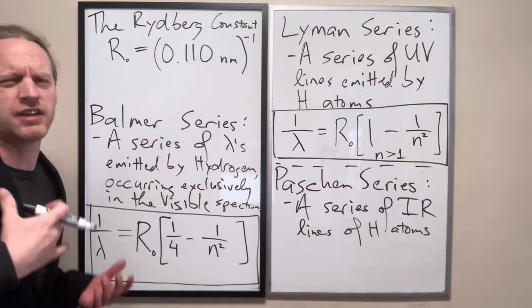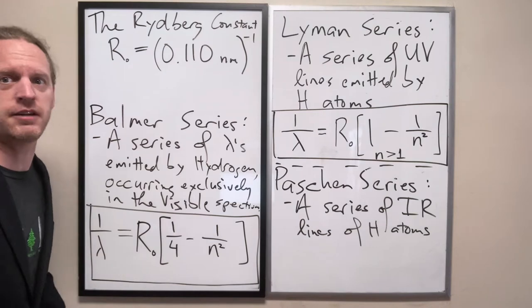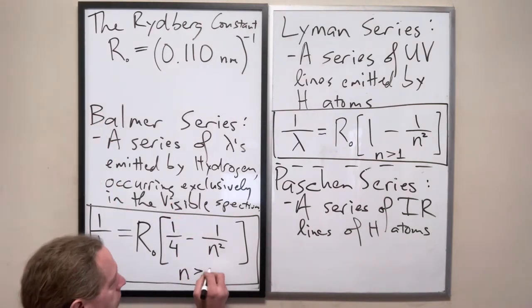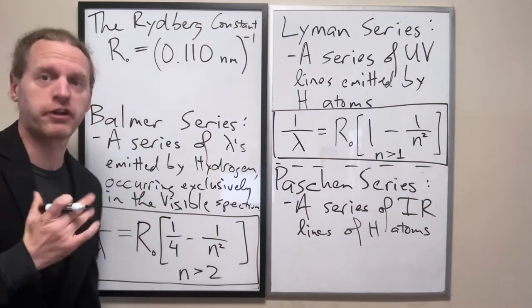That doesn't help us in calculating wavelengths because a negative wavelength isn't a physically meaningful thing. So this is only true for n greater than 2, and strictly greater to be clear.